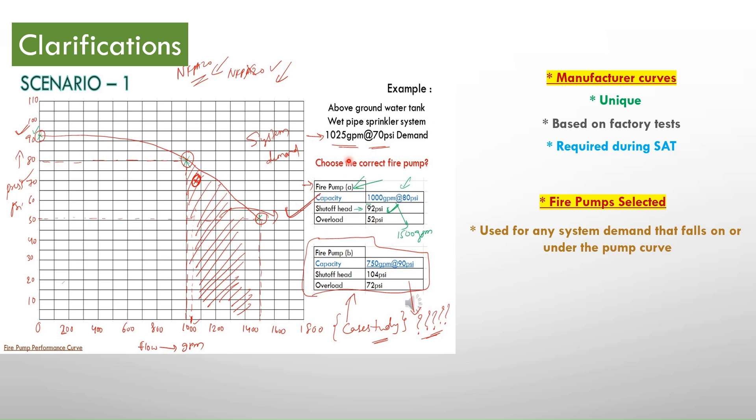But in case our demand is about 700 GPM at 70 PSI that also falls under this particular fire pump curve. So we can select this pump option A.